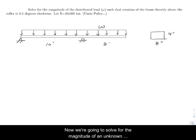Now we're going to solve for the magnitude of an unknown distributed load W and a constant distributed load on the beam shown. What we know is that above the roller, which is sitting right there, we're told that the rotation of the beam is half a degree clockwise.